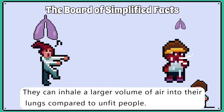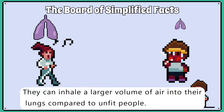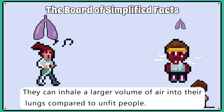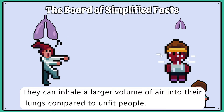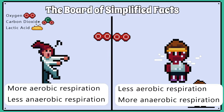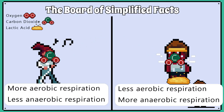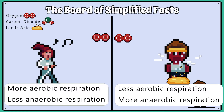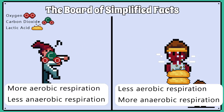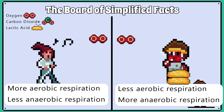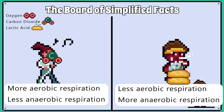They can inhale a larger volume of air into their lungs compared to unfit people. They are more efficient at utilising oxygen, so they rely less on anaerobic respiration.